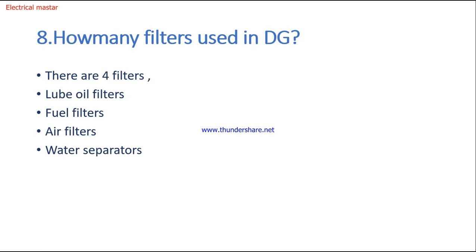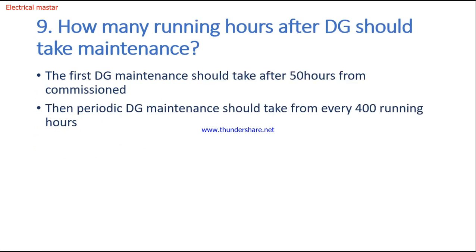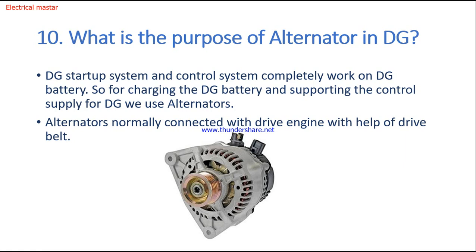Next question: how many filters are used in a diesel generator? There are four types of filters: lube oil filters, fuel filters, air filters, and water separators. Next question: after how many running hours should a diesel generator be maintained? For a newly commissioned generator, the first maintenance should be taken after 50 hours. After that, periodic maintenance should be done every 400 running hours.